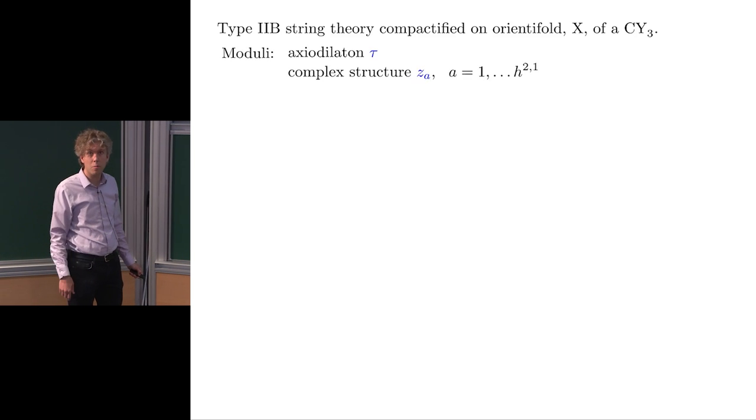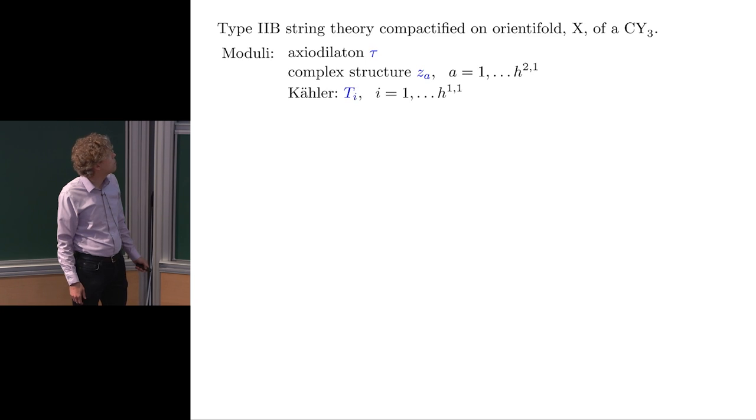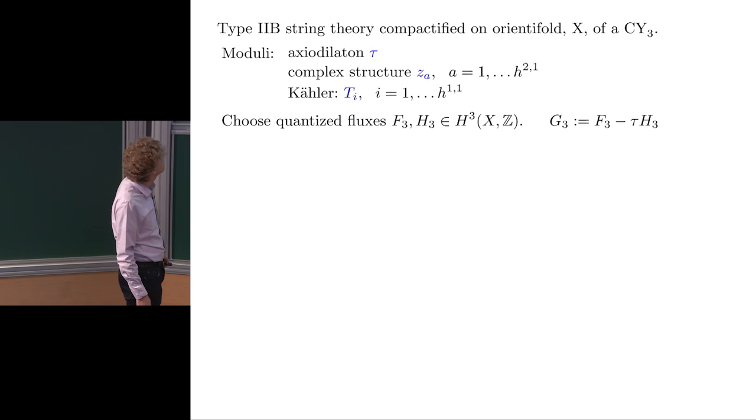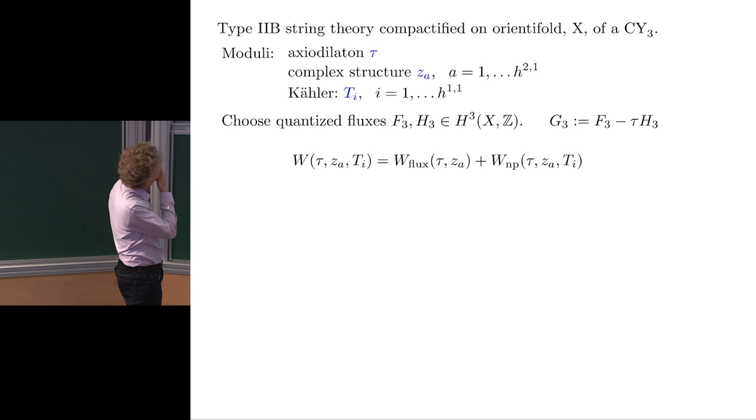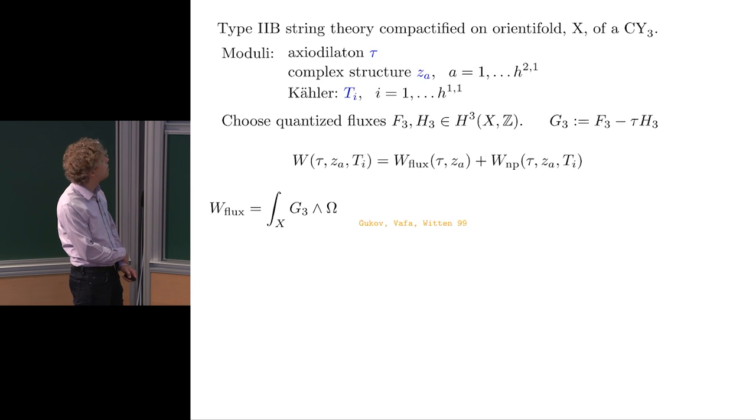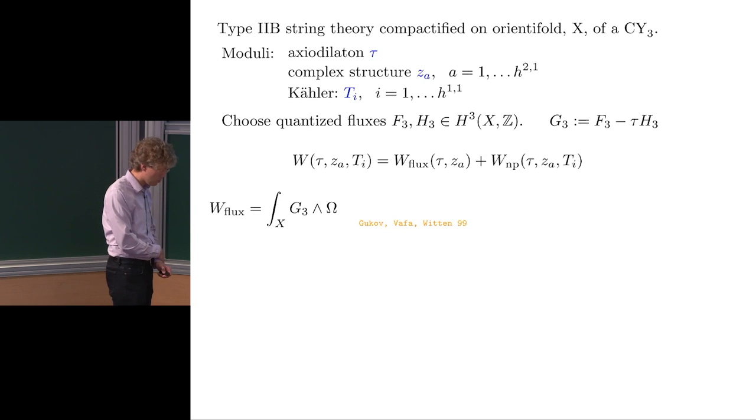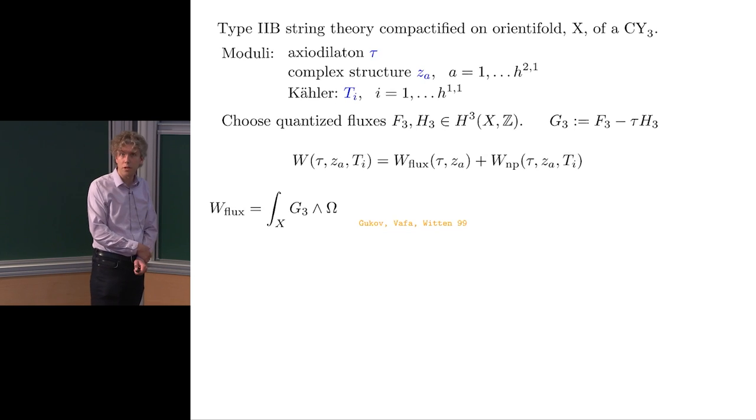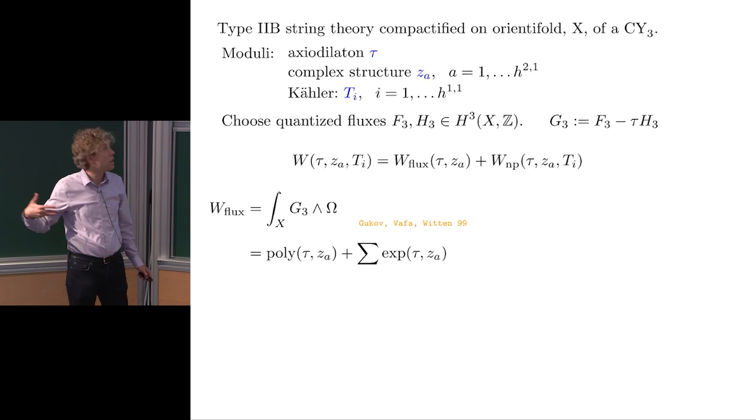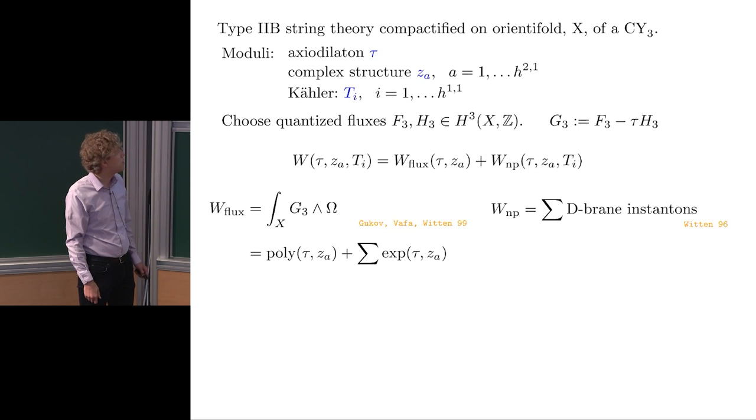We're going to think about type 2B string theory on an orientifold of a Calabi-Yau threefold. The moduli here are the axio-dilaton which is complex, H21 complex structure moduli Za, and H11 Kahler moduli Ti. We're going to choose quantized three-form fluxes F3 and H3 and determine thereby a flux superpotential. The flux superpotential after much work by many people has been sorted out. The original shape was written down by Gukov, Vafa, and Witten in 1999. The flux superpotential takes the form of an integral of the three-form flux wedge the holomorphic 3-0 form of the Calabi-Yau. That can be written as a polynomial in the moduli fields plus a sum of exponentials in the moduli fields. The non-perturbative terms in the superpotential come from D-brane instantons.